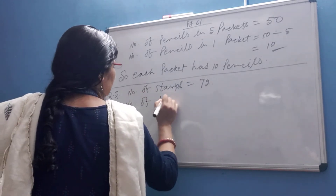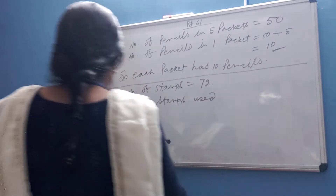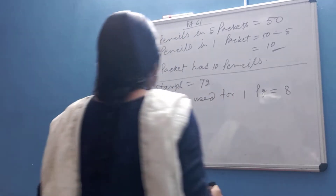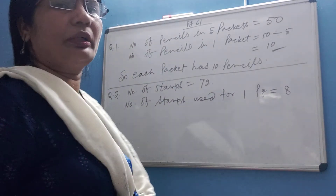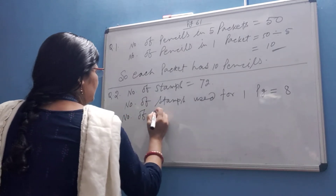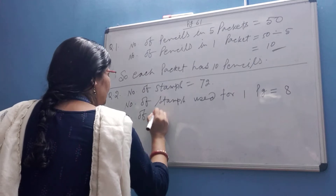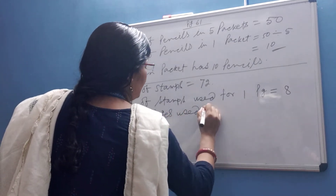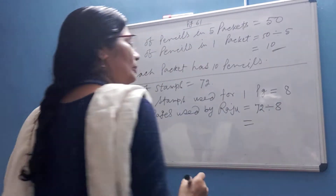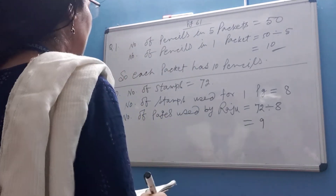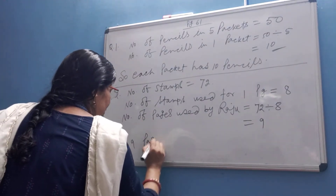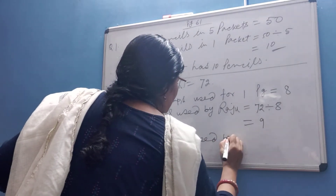Number of stamps used for one page is equal to 8. Then, number of pages used by Raju is equal to 72 divided by 8 is equal to 9. So, 9 pages are used by Raju.